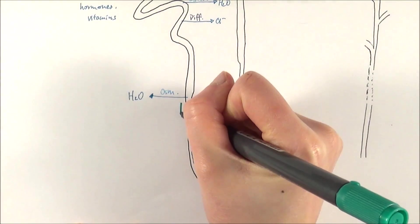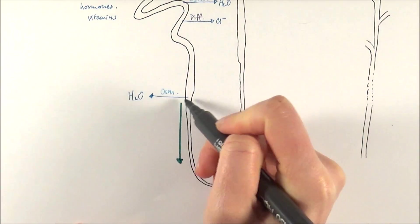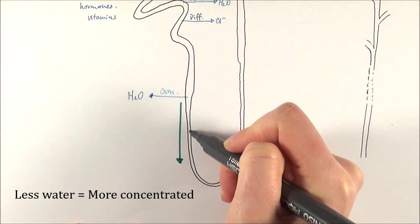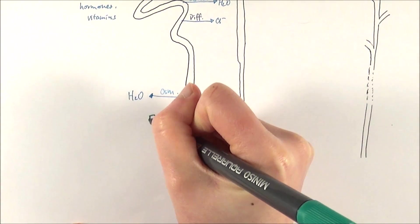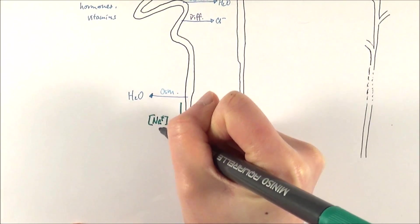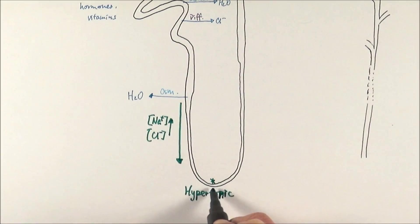As we move down the loop of Henle, or we call the descending limb of the loop of Henle, because water is moving out here, therefore the ion concentration inside the filtrate will increase. So things like the concentration of sodium ions and the concentration of chloride ions will increase. When it reaches this bottom bit, we say the filtrate has reached a hypertonic point, which means it has a really high concentration of salt inside.